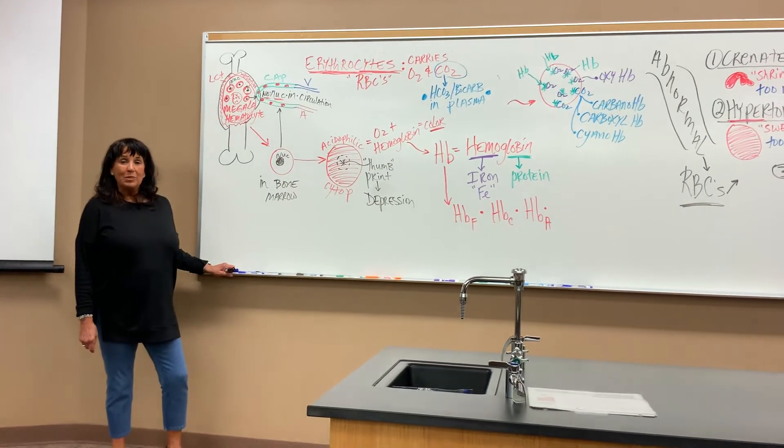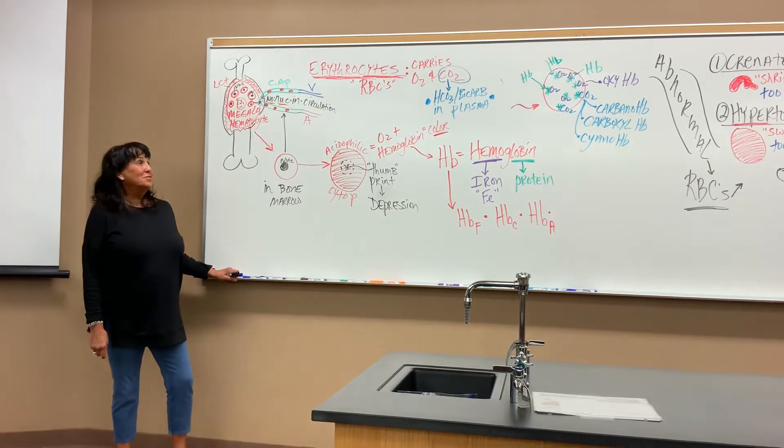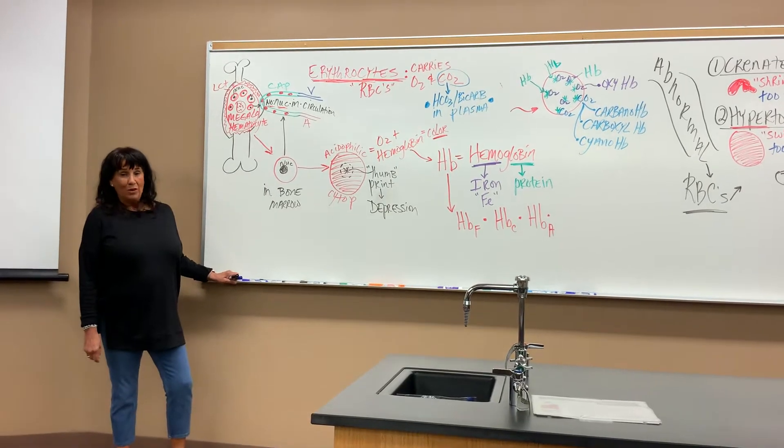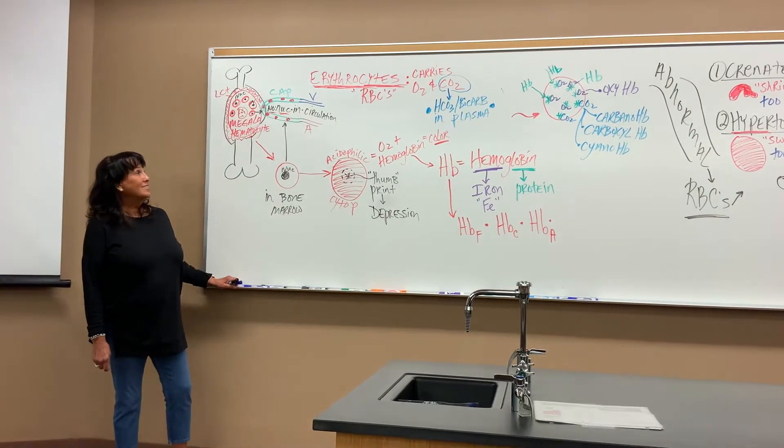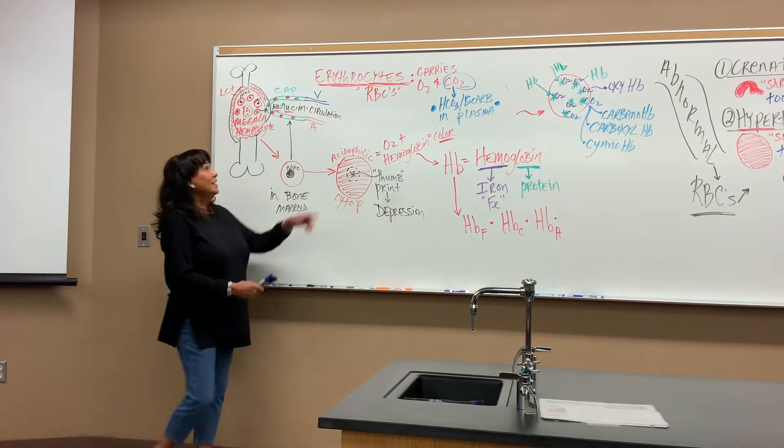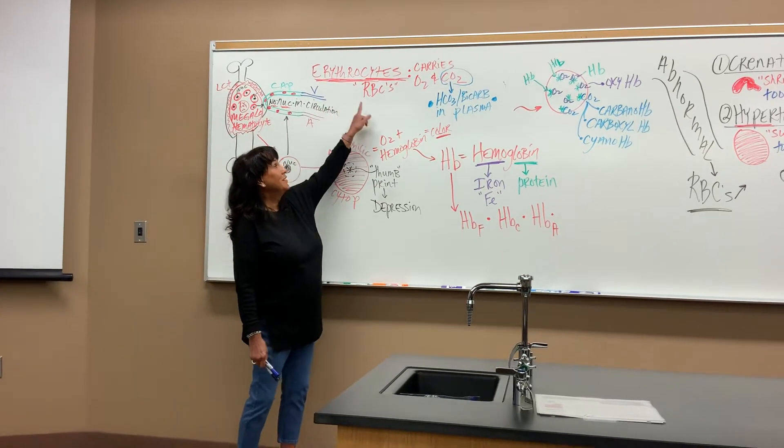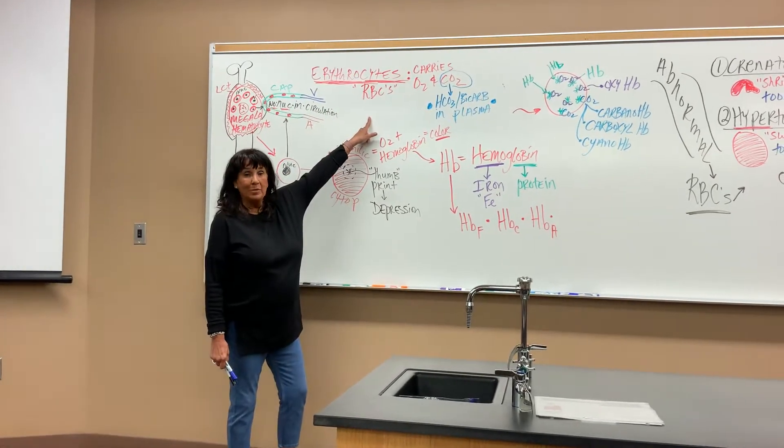Our last blood cell will be erythrocytes. This is the most numerous of all the blood cells, the hematocytes. Here's the term, erythrocyte, common name RBC, red blood cells.